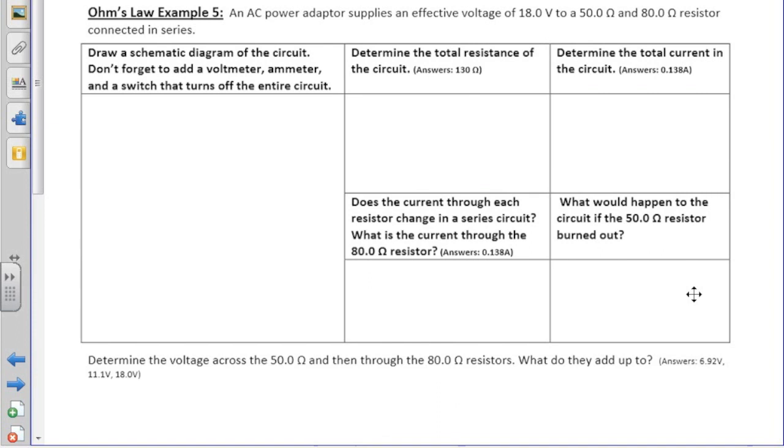Because this circuit is a series circuit, according to the question, we will draw both our 50 ohm and 80 ohm resistor in series. Because we haven't learned the symbol for an AC power adapter, we'll represent the voltage using a battery.